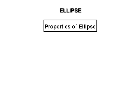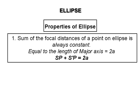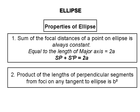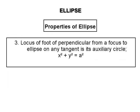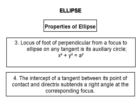Properties of the ellipse. One: the sum of the focal distances of a point on the ellipse is always constant and equal to the length of the major axis, that is 2a; therefore SP plus S'P equals 2a. Two: the product of lengths of perpendicular segments from the foci on any tangent to the ellipse x² upon a² plus y² upon b² equal to 1 is b², where b is the semi-minor axis. Three: the locus of the foot of the perpendicular from a focus to any tangent is the auxiliary circle x² plus y² equal to a². Four: the intercept of a tangent between its point of contact and the directrix subtends a right angle at the corresponding focus.